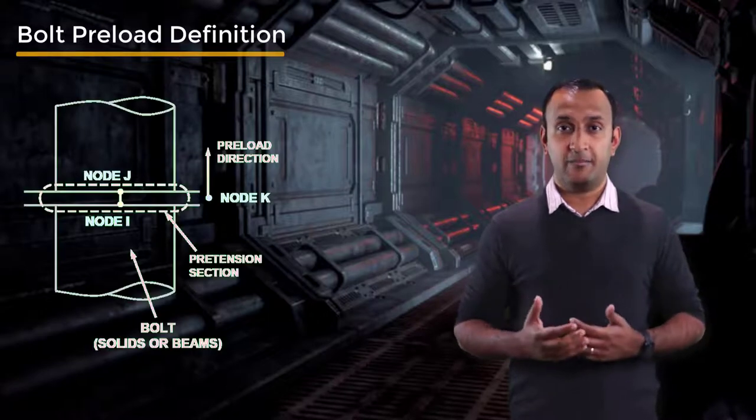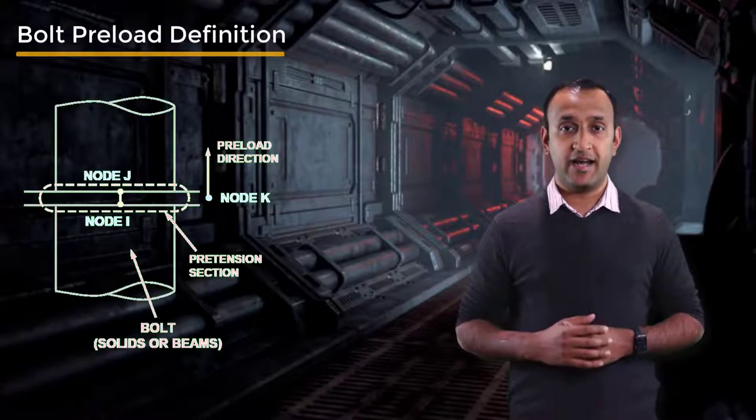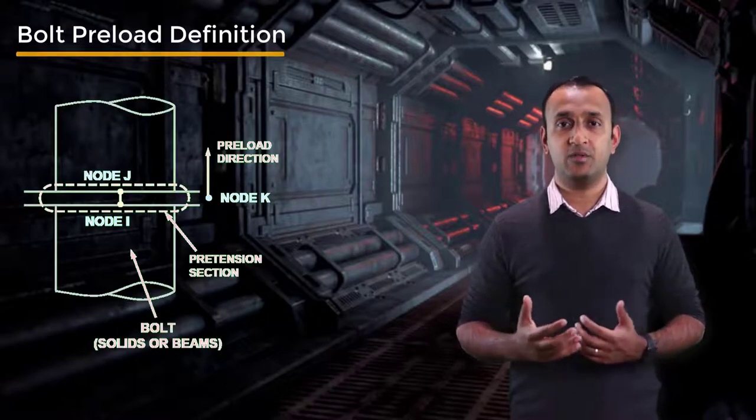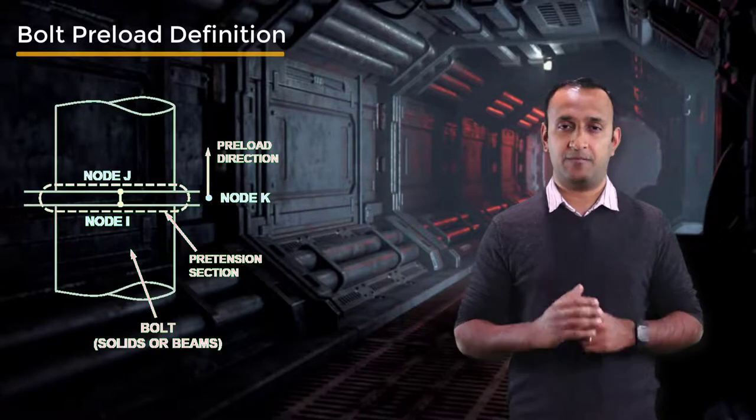In the previous lessons, we learned that bolts can be modeled as either solid bodies or as line bodies, but bolt preload can be defined in both cases. In general, preload is applied by splitting a bolt into two parts and connecting them using constraint equations to create a state of tension.